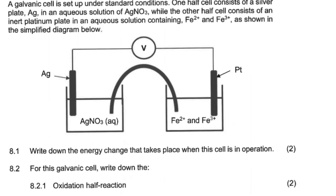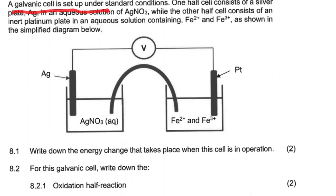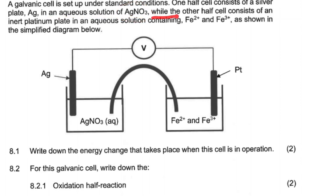Welcome to my YouTube channel. We are busy with the galvanic cell. The galvanic cell has two beakers, which are two electrolytes. The galvanic setup under standard conditions — one half-cell consists of a silver plate, which is Ag. We're talking about a silver electrode, and an aqueous solution of silver nitrate.